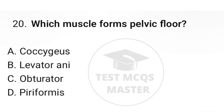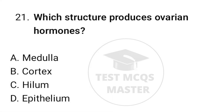Question number twenty: which muscle forms the pelvic floor? The correct option is B, levator ani. Question number twenty-one: which structure produces ovarian hormones? The correct option is B, cortex.